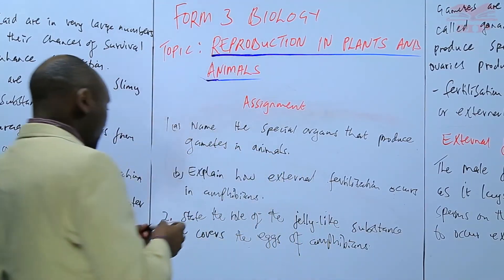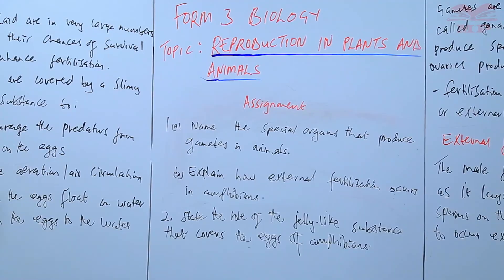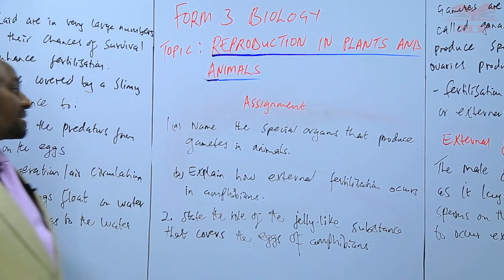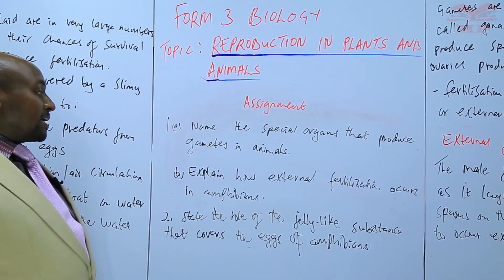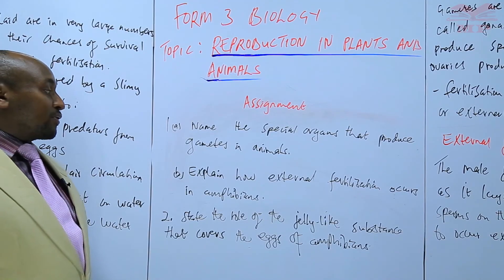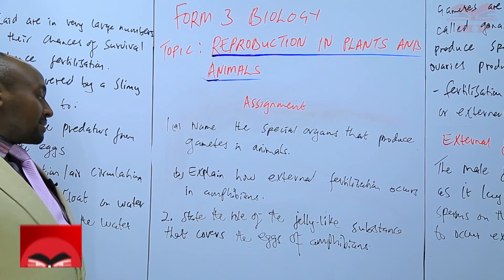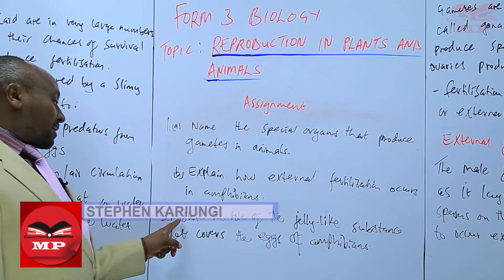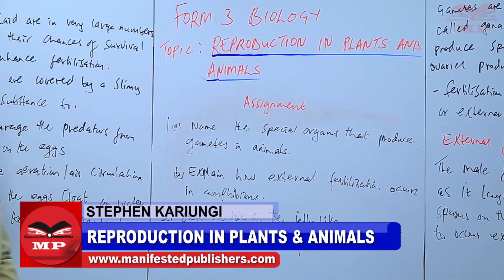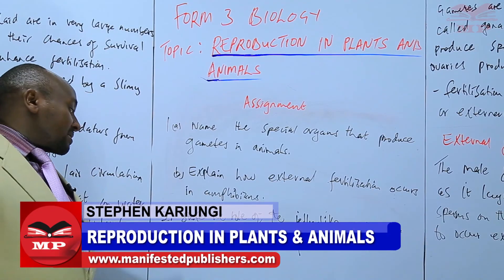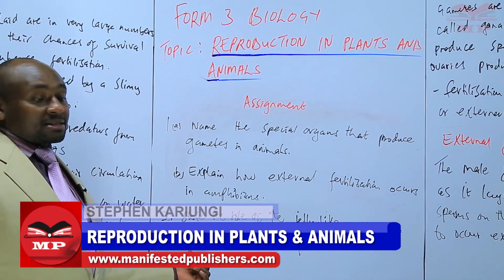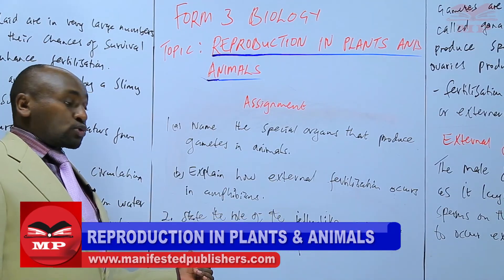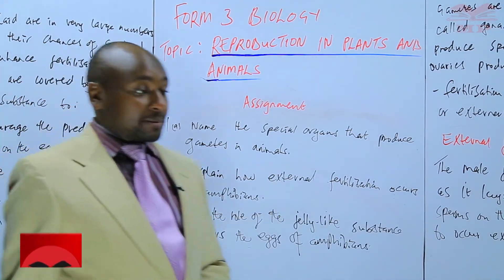Review questions: Name the special organs that produce gametes in animals. Explain how external fertilization occurs in amphibians. State the role of the jelly-like substance that covers the eggs of amphibians. We'll stop there until next time. Goodbye.